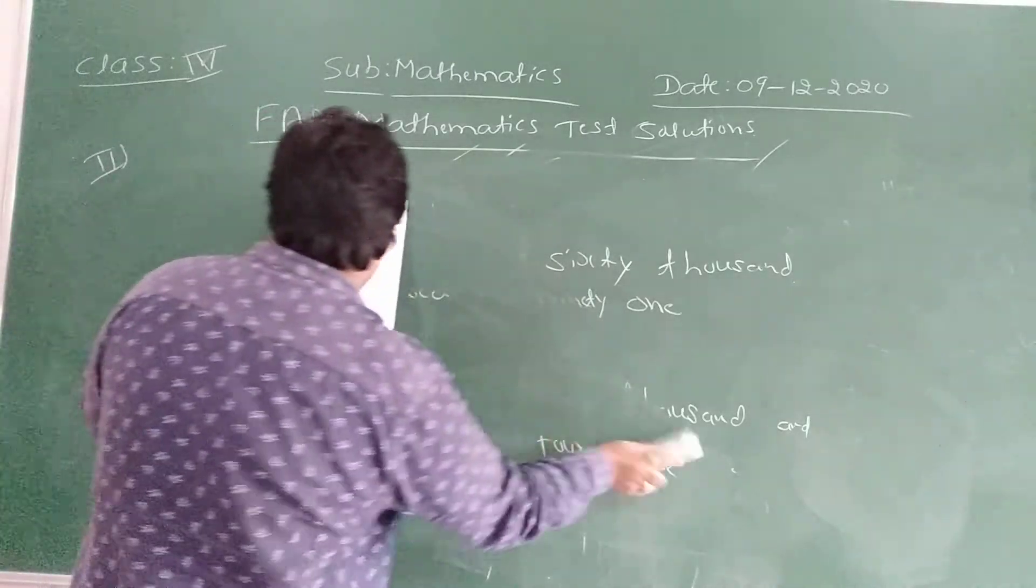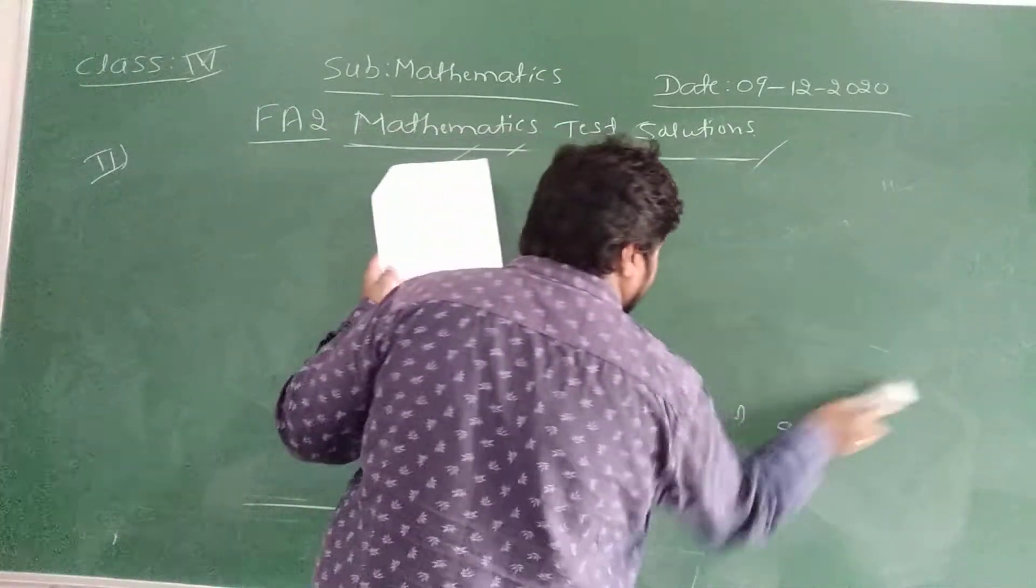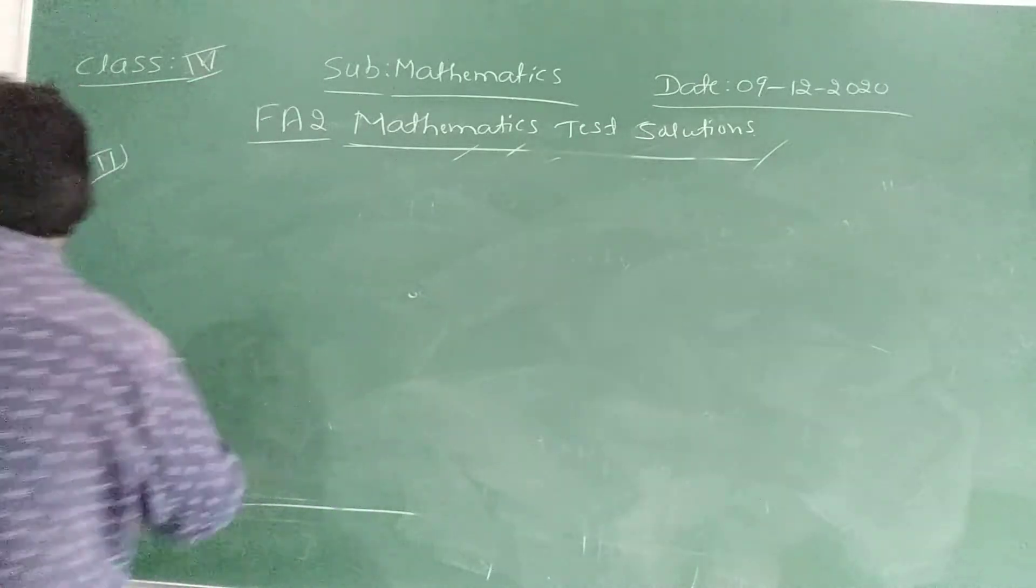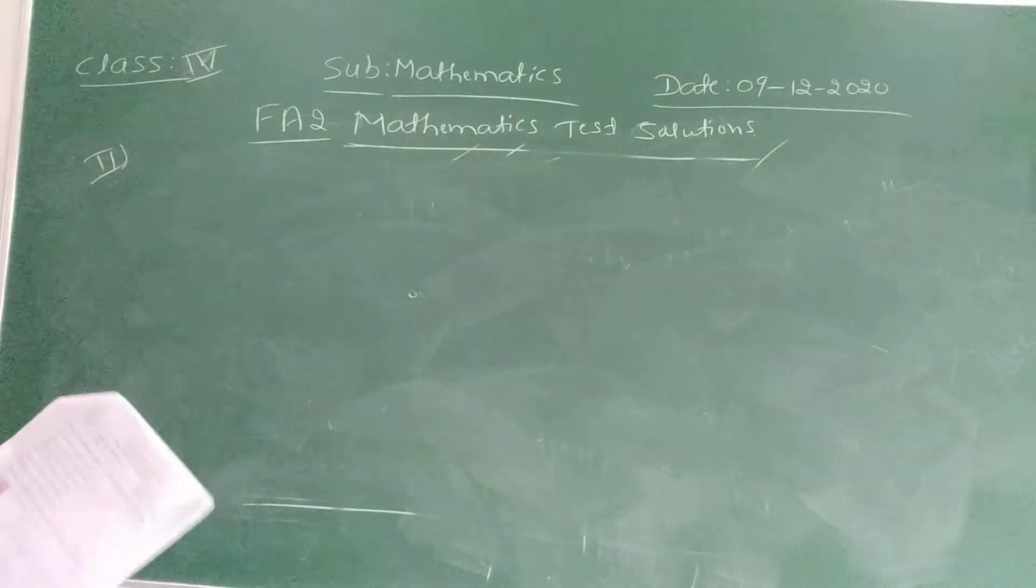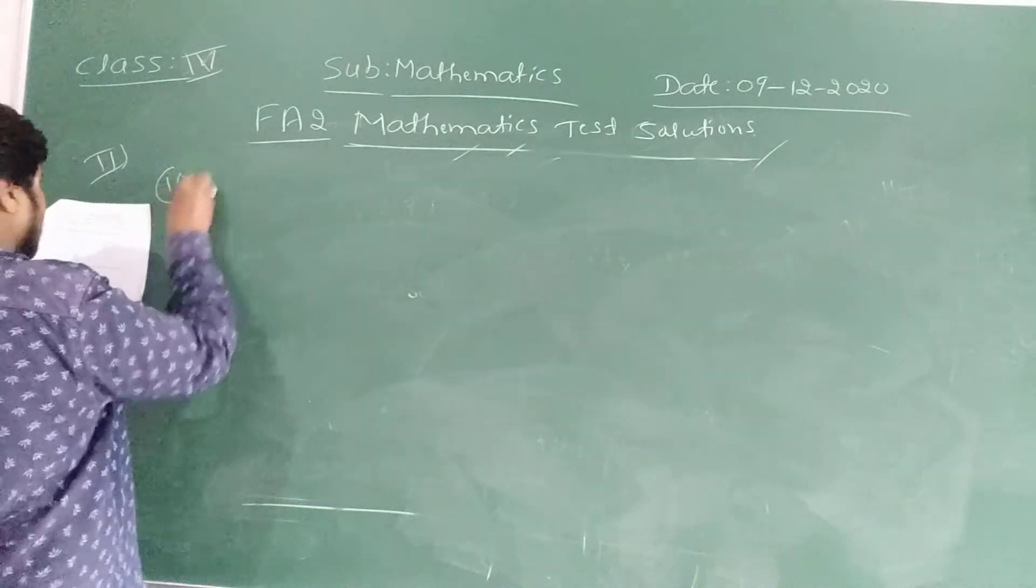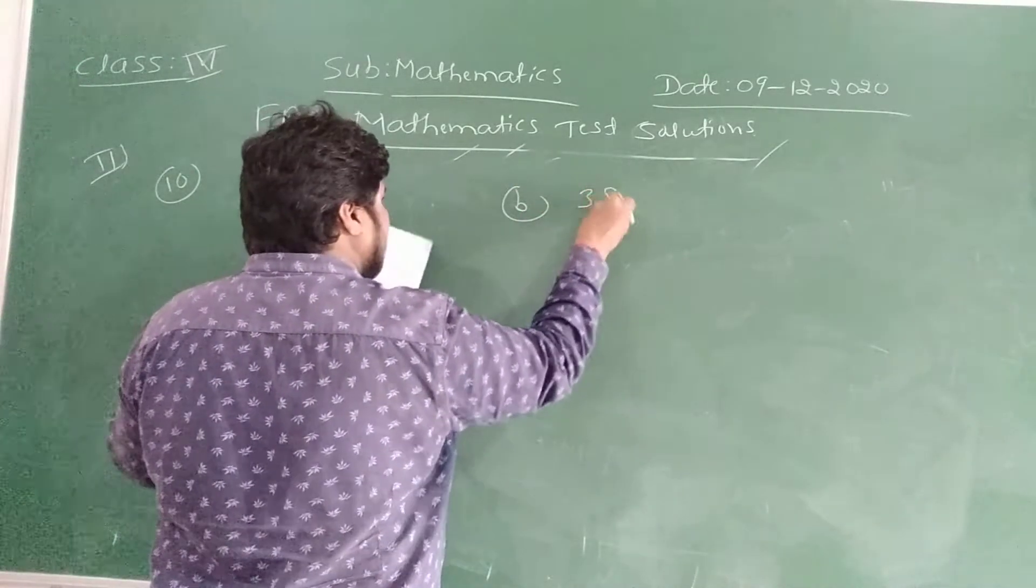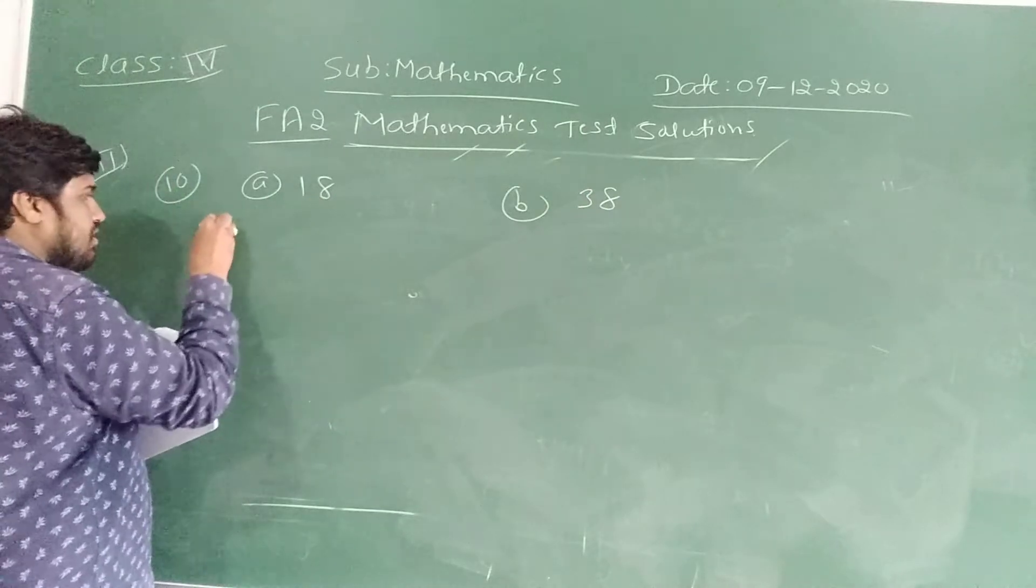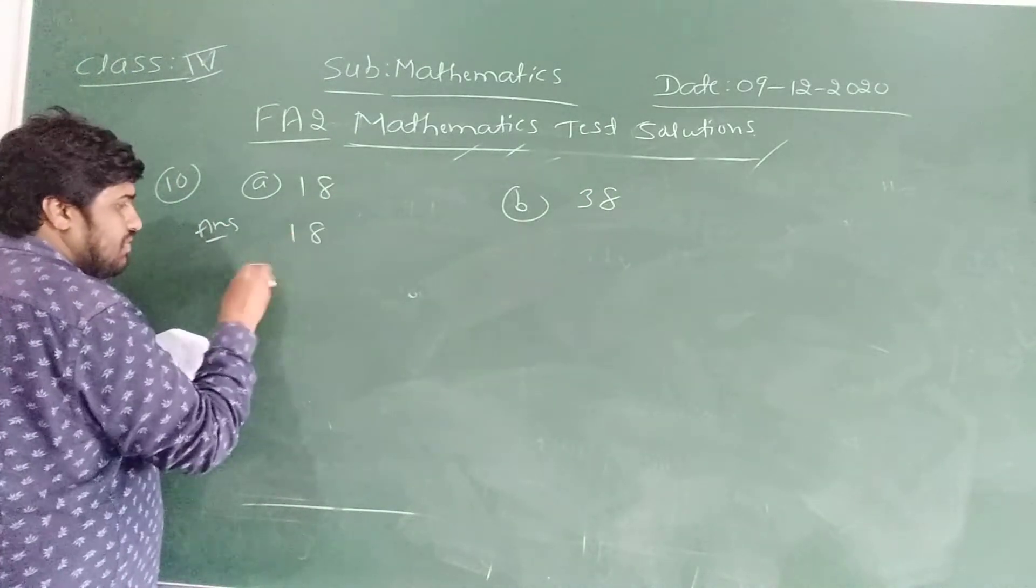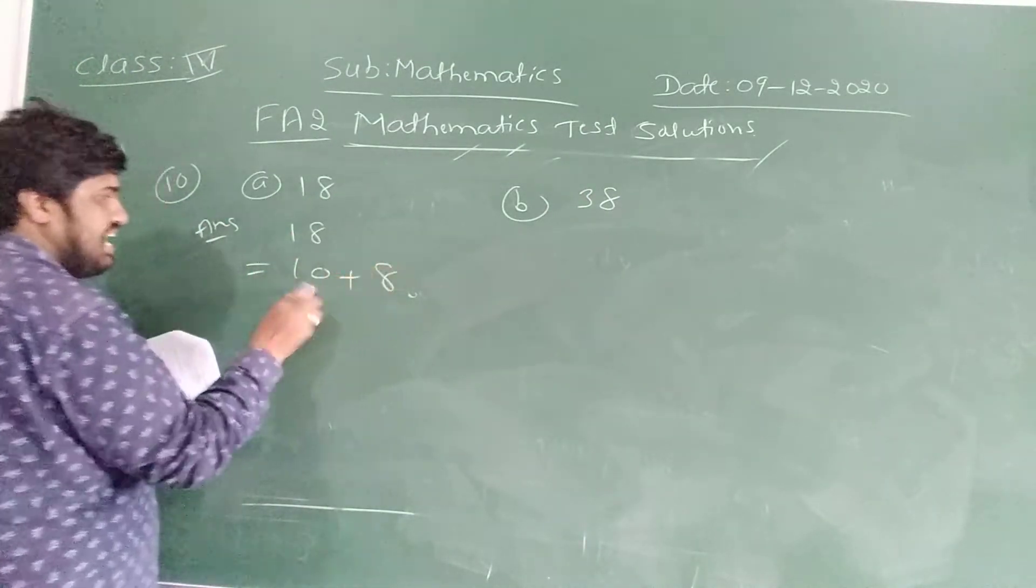341, 300 and 41. Okay children, now it is the solution of question number 9. Next move to question number 10. Question number 10 is write the following numbers in Roman numbers. What is the first question? The first one is 18. How to write 18? 18 can be determined as 10 plus 8.